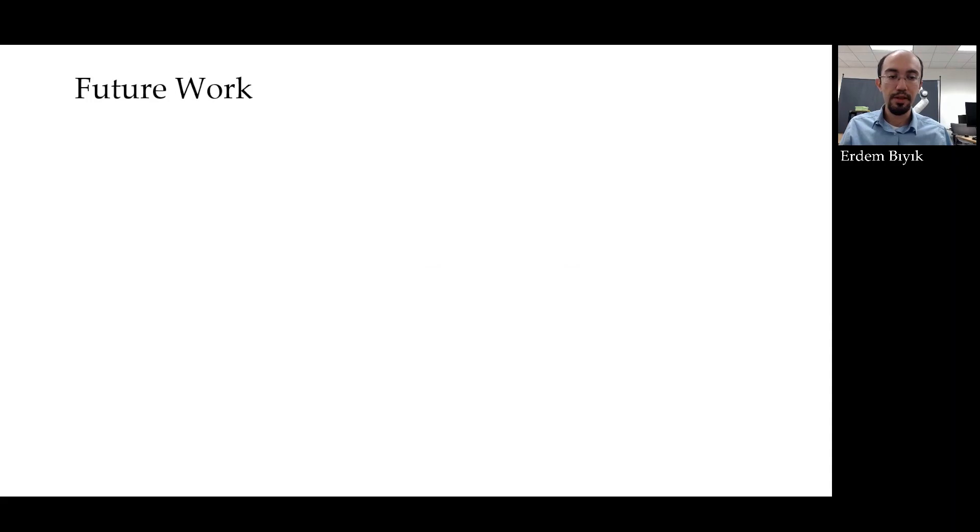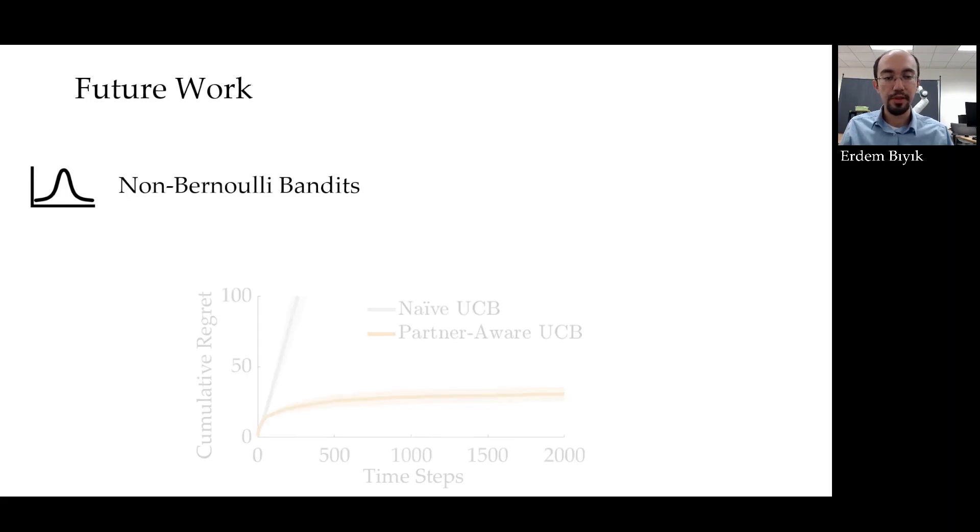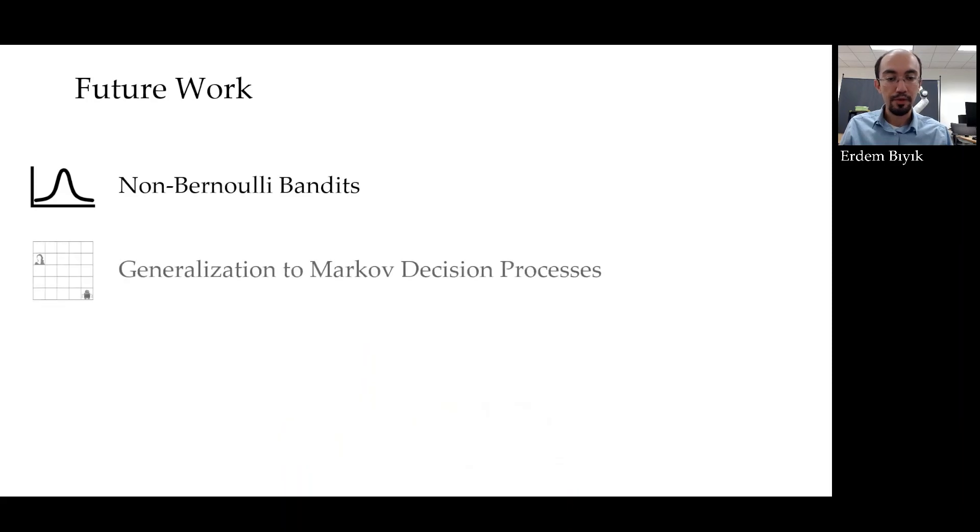I would like to end with discussing some of the potential future directions. First of all, we looked at Bernoulli bandits in this paper. But our preliminary results suggest partner-aware UCB can also give sublinear regret in other bandit formulations, such as Gaussian bandits as in this case. And of course, generalization of our results to Markov decision processes would be interesting. Partner or opponent modeling techniques already exist in these more complex settings, but as far as I know, they lack theoretical guarantees.